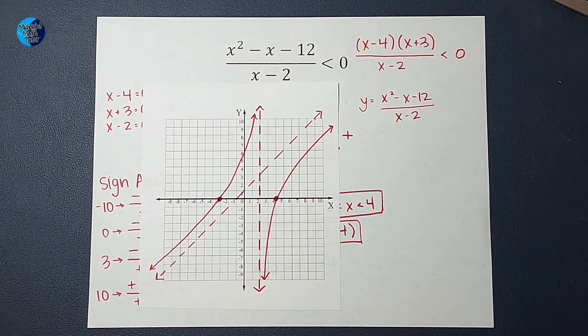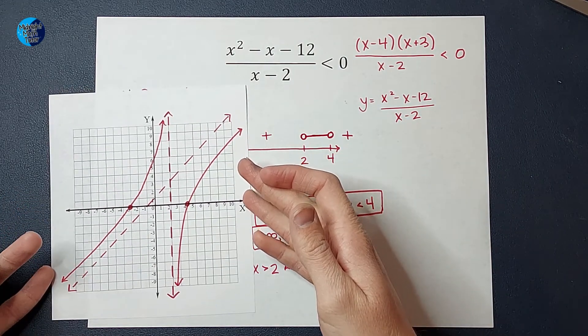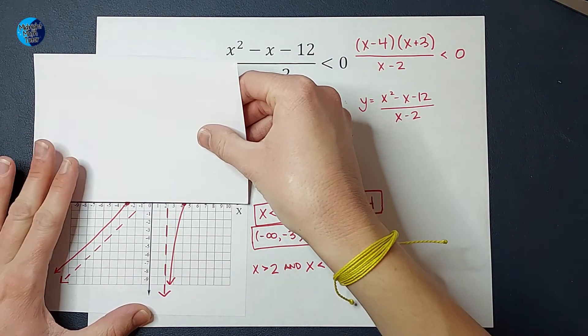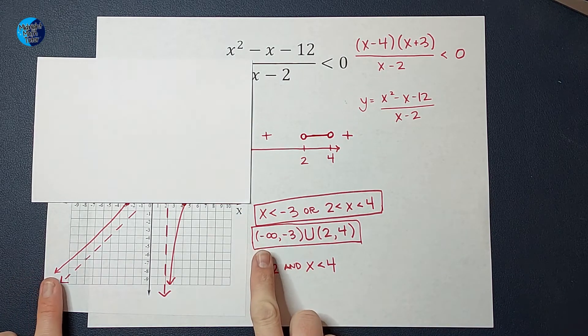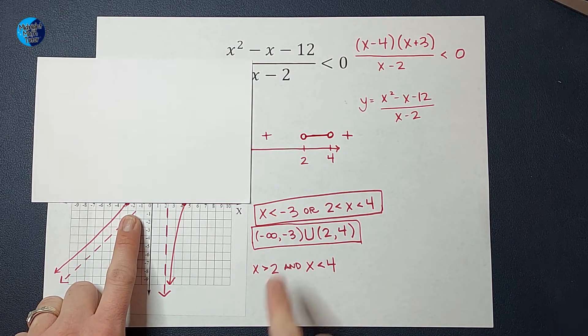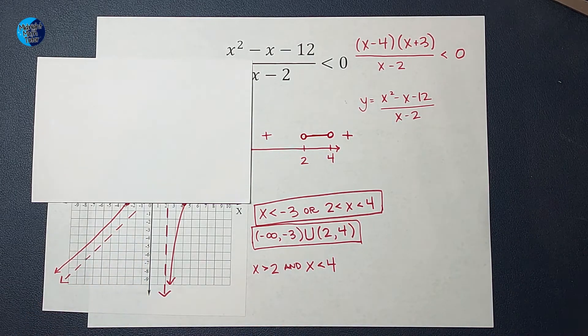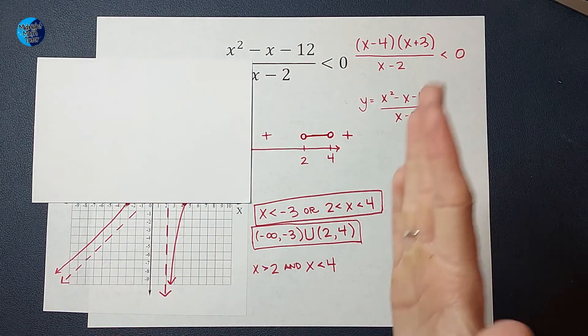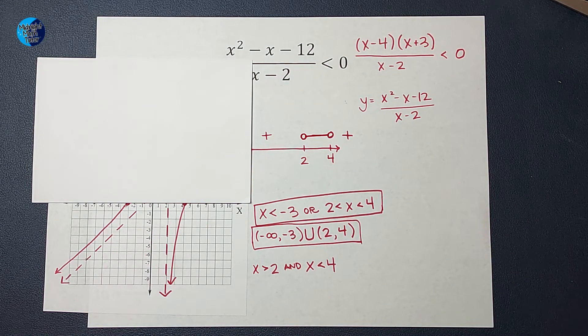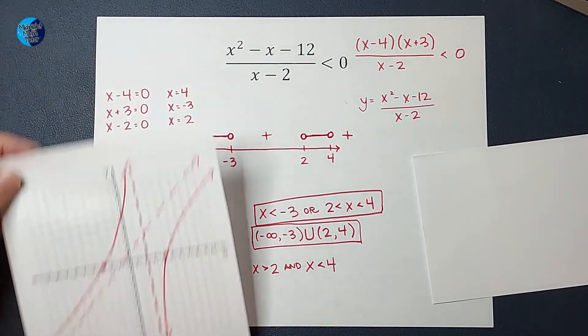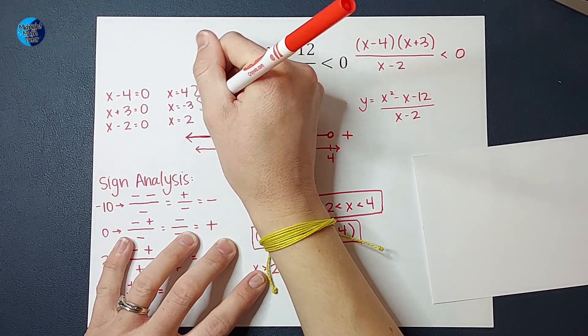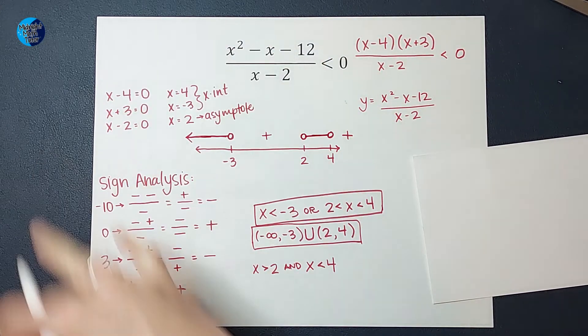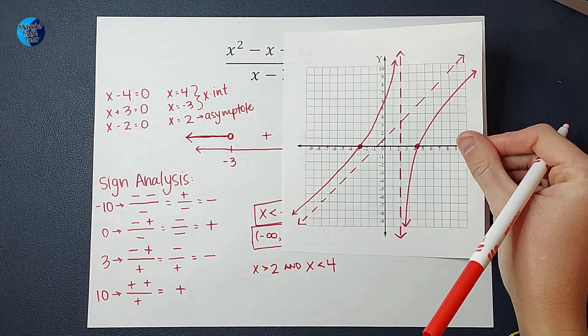Remember my original question was, where is this less than 0? Well, we graphed it, so we can see visually where it is less than 0. It is less than 0 from negative infinity to -3, not including -3 because that's where it actually is 0. And it's also less than 0 from 2 to 4, not including 2 because of the asymptote and not including 4 because that's where it actually is 0. When we set everything equal to 0, we were actually finding our x-intercepts and our asymptote. And this sign analysis business was just figuring out which direction the graph went in each of these regions.